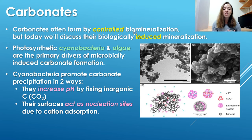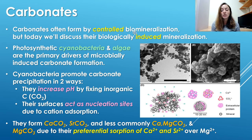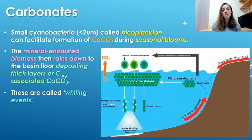Cyanobacteria promote carbonate precipitation in two main ways: they increase pH by fixing inorganic carbon or CO2 as part of their necessary processes to live — not necessarily trying to increase pH, it's just a byproduct of their metabolism — and they also provide surfaces as nucleation sites. By doing so they promote the formation of calcium carbonate (calcite and aragonite), strontium carbonate (strontianite), and also but less commonly dolomite and magnesium carbonate (magnesite). They form magnesium-rich carbonate minerals less often because they preferentially absorb calcium and strontium cations over magnesium cations.